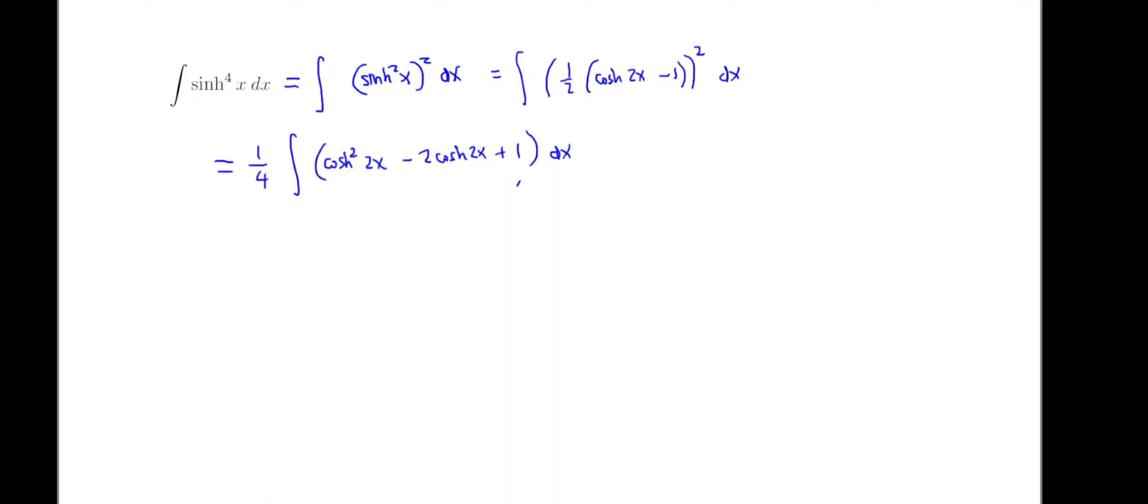Squaring the one-half is one-fourth. I can bring that outside the integral, and then we can just use our good old formula for a binomial square, except we're applying it to this cosh 2x minus one binomial. Now, this last term, one, we can integrate. The cosh 2x we can integrate. Now, what about cosh squared of 2x? Well, that's the same kind of thing that we had to worry about on the previous screen, except we just have an argument of 2x.